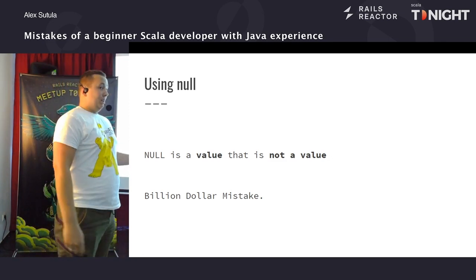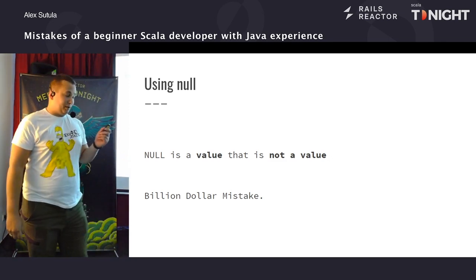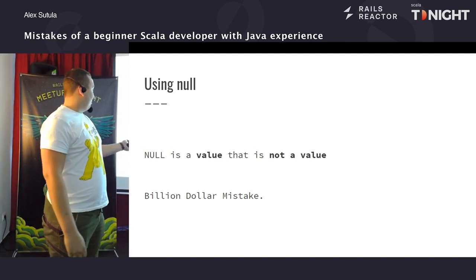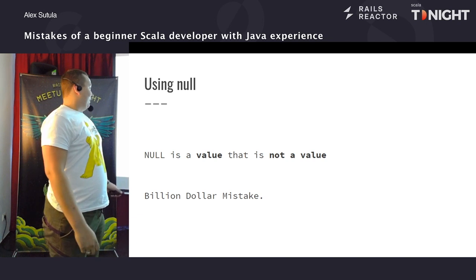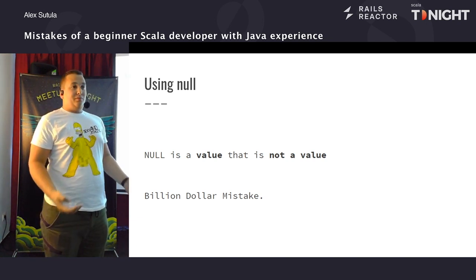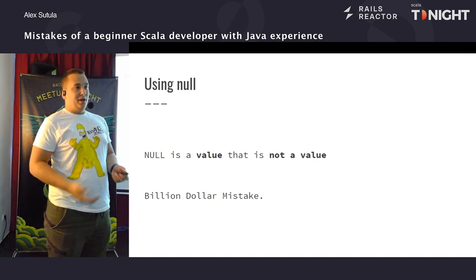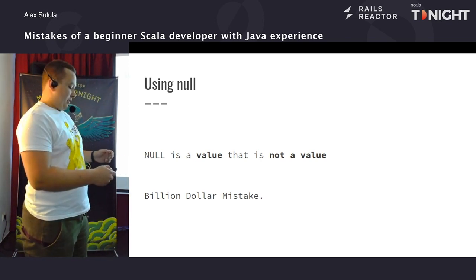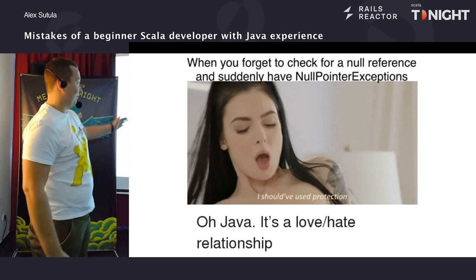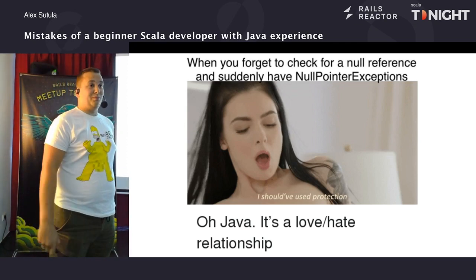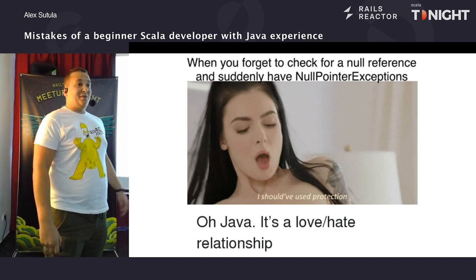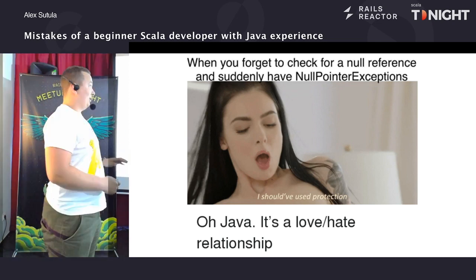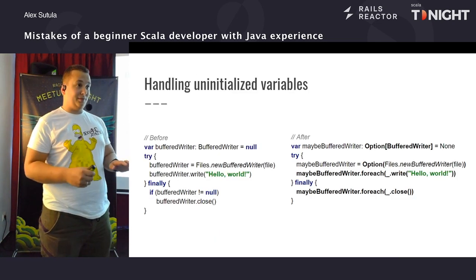Отже, використання null. Null — дуже велика проблема. Проблема на мільйон доларів. Проблема полягає в тому, що це значення, яке означає, що значення немає — тобто вже логічна помилка. І це ваше обличчя, коли ми стикаємося з NullPointerException прямо в рантаймі.